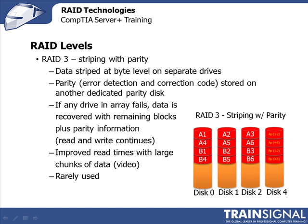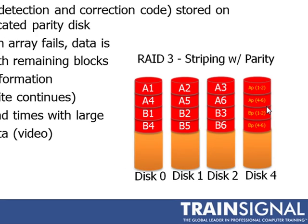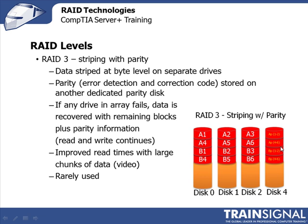RAID 3 is called Striping with Parity. Under this scheme, data is striped at the byte level on separate drives, while parity — which is error detection and correction code — is stored on another dedicated parity disk. As you can see in the image, data is striped across three drives in the array, with a separate parity disk. With RAID 3, if any drive in the array fails, data can be recovered with the remaining blocks plus the parity information. Read and write operations can continue, and this level gives you improved read times, especially with large chunks of data like video.